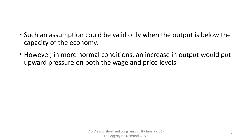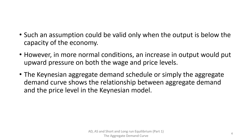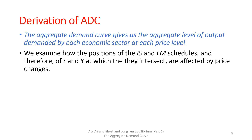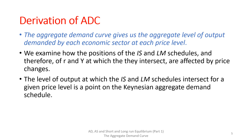However, in normal conditions, an increase in output would put upward pressure on both wages and thus on the price level. To study this phenomenon, we introduce the aggregate demand curve, which shows the relationship between aggregate demand and the price level in the Keynesian model. In other words, the aggregate demand curve gives the aggregate level of output demanded by each economic sector at each price level. To derive this, we examine how the position of IS and LM schedules, and therefore of interest rate and income, are affected by price changes. The level of output at which IS and LM schedules intersect for a given price level is a point on the Keynesian aggregate demand schedule.